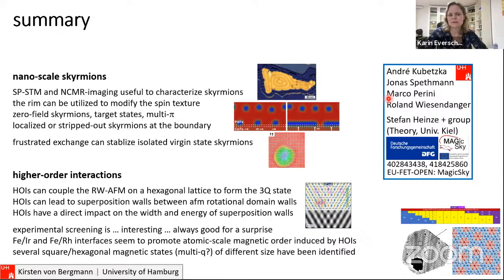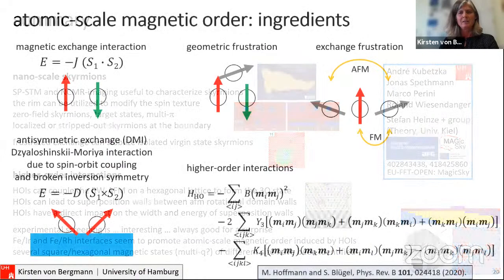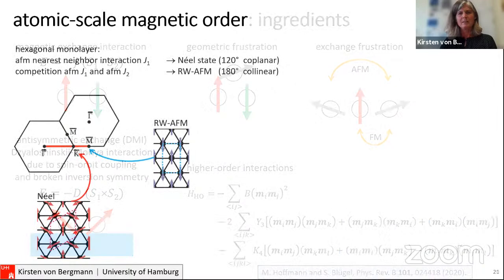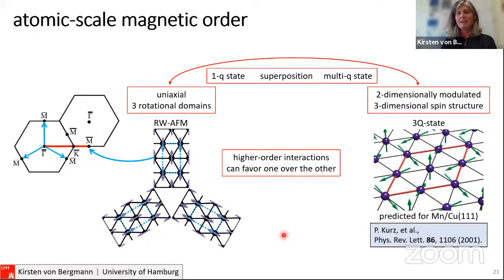Q: You mentioned single-Q and multi-Q states depending on higher order interactions — what is the role of temperature and fluctuations? A: Within the Heisenberg model, the single-Q and multi-Q states are degenerate, and the higher order interactions create the energy difference between them — no additional temperature is needed for stabilization of this kind of perfect multi-Q state. For skyrmion lattices described as multi-Q states, the stabilization mechanism relative to the spin spiral was not always clear; in the very early work it was fluctuation-stabilized.